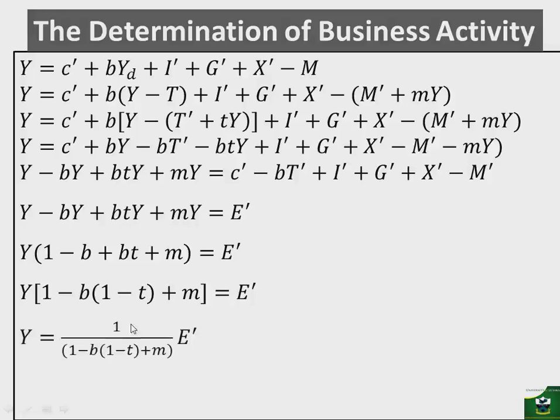And if we divide through by this ratio, then what we'll have is 1 over 1 minus B, open bracket, 1 minus T, close, then plus M. And this part here, remember, is now our multiplier, so we can put K there. So meaning equilibrium income is equal to the multiplier multiplied by the autonomous expenditure. And remember now, the multiplier here shows the part of imports, the marginal propensity to imports, the tax rate, the marginal propensity to consume. So when you see this M here, you know you are dealing with an open economy.